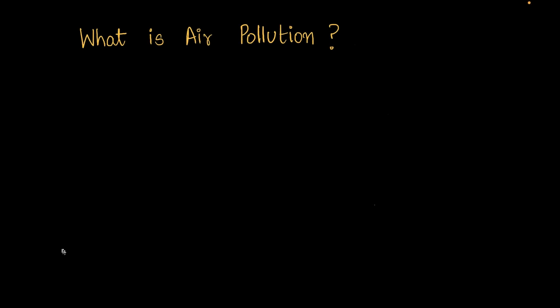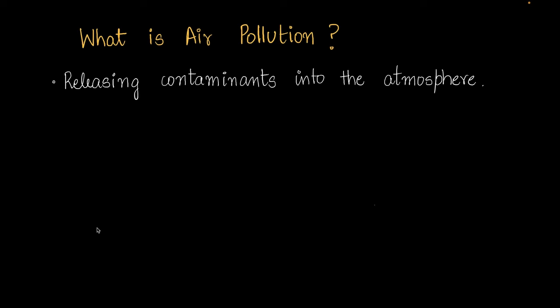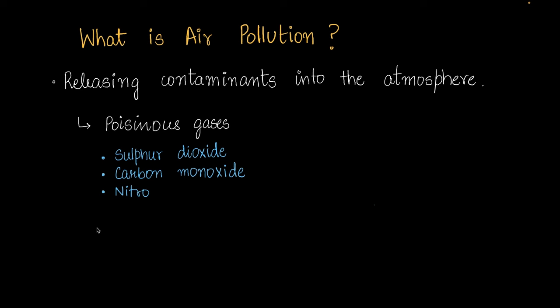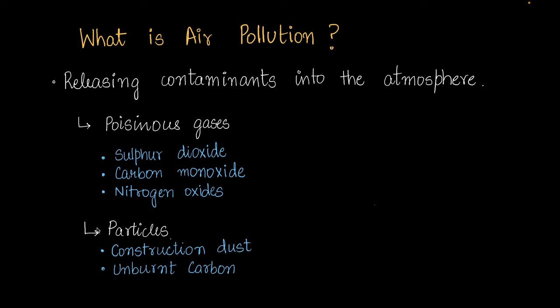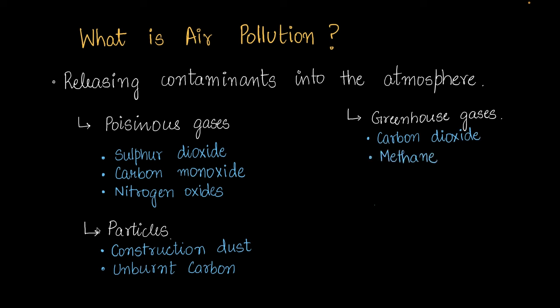Air pollution is the releasing of harmful contaminants into the atmosphere. These contaminants can be poisonous gases like sulfur dioxide, carbon monoxide, or nitrogen oxides — very harmful if inhaled, causing diseases like asthma or even death in large quantities. Another type is particulate matter: particles like construction dust and unburnt carbon can also cause lung issues. A third type is greenhouse gases — gases like carbon dioxide and methane — which contribute to global warming.